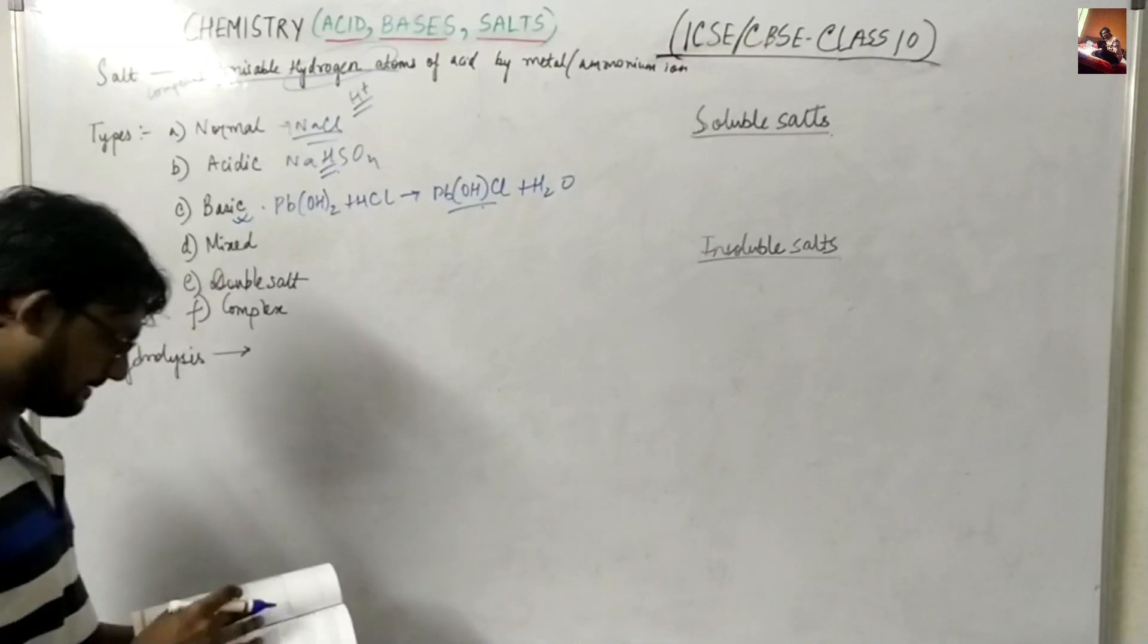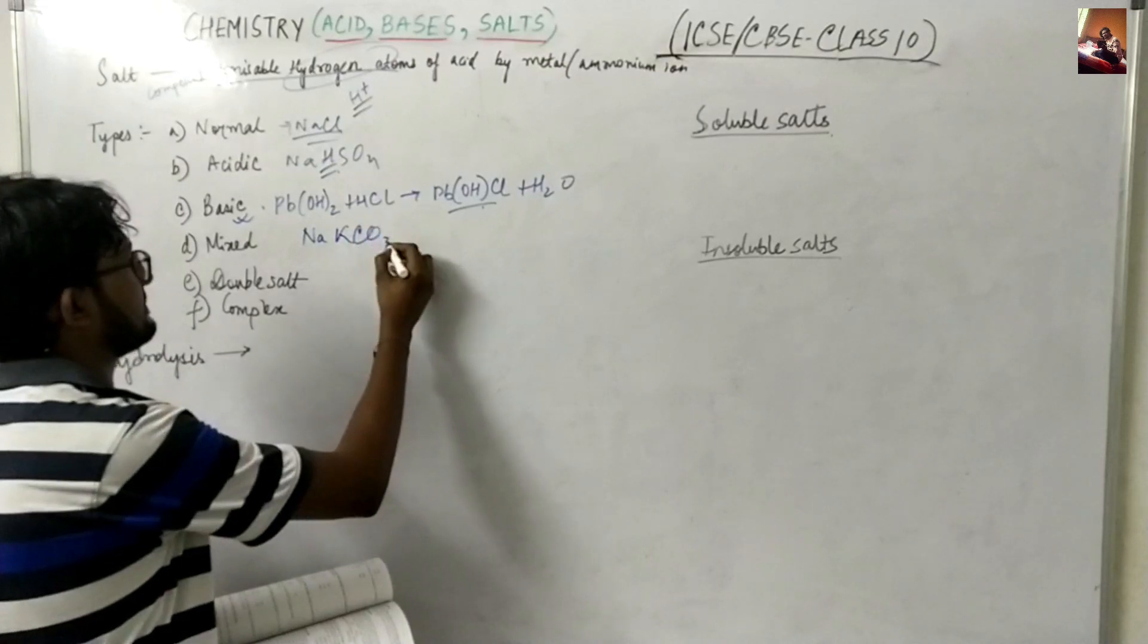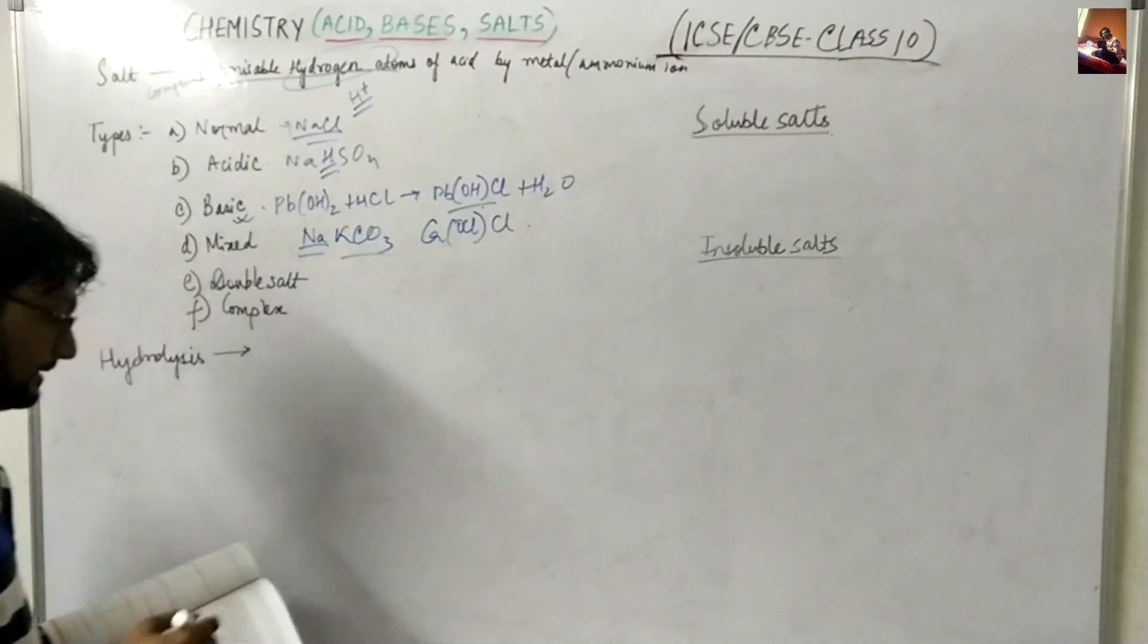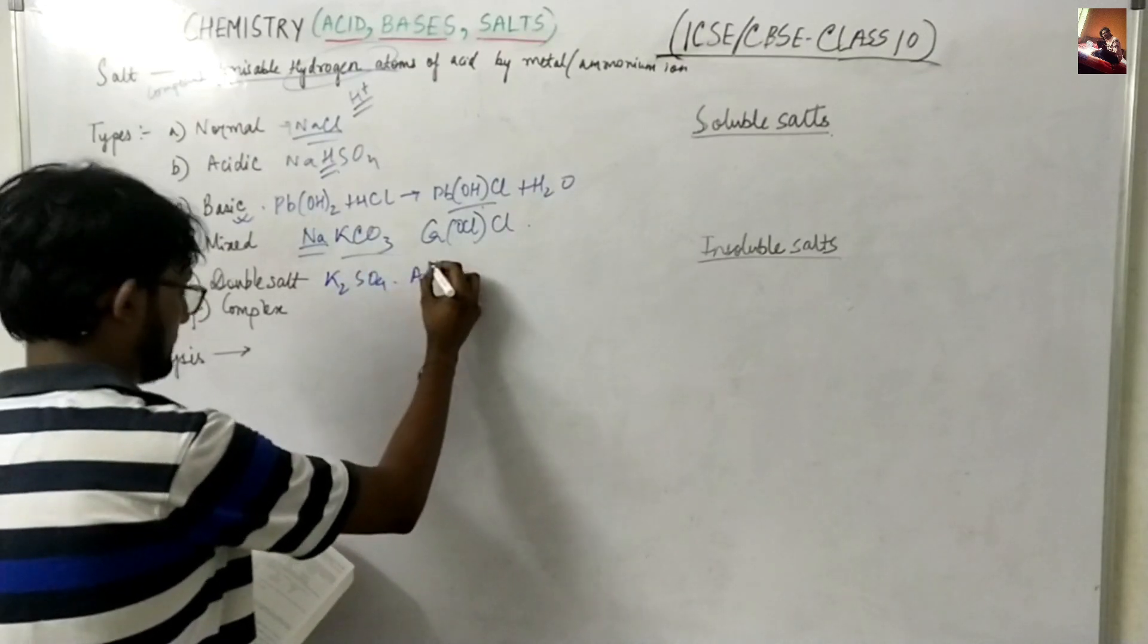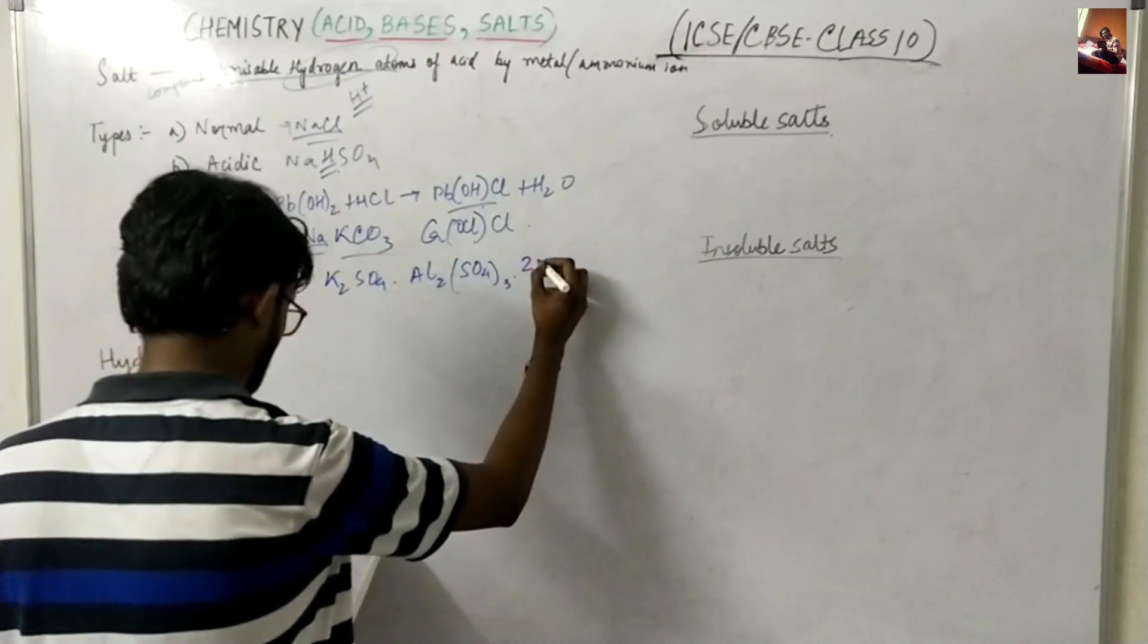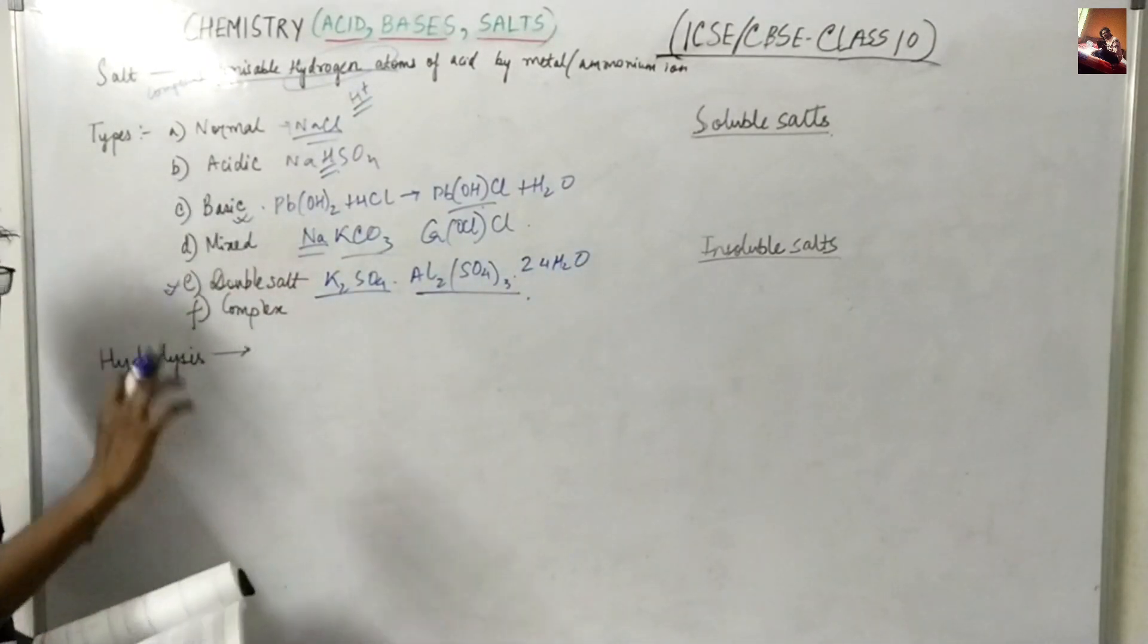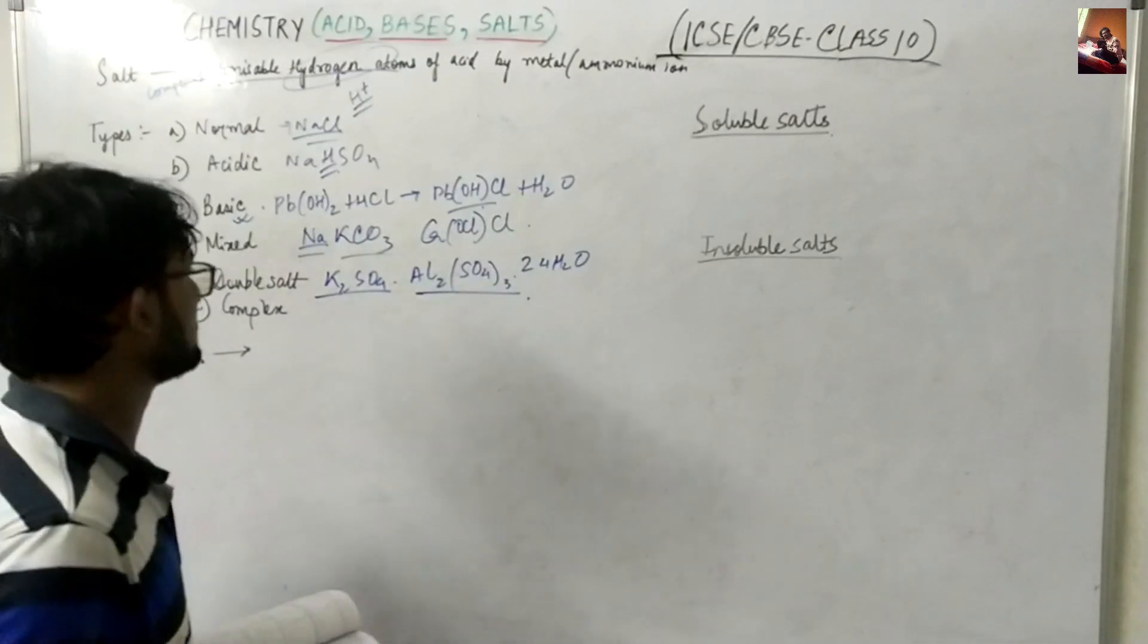Mixed salt. Mixed is like it has two various kinds of like NaKCO3 Ca(OCl)Cl. In case of double salt, two ions like K2SO4·Al2(SO4)3·24H2O. This is kind of a double salt like K2SO4 and Al2(SO4)3, aluminum and potassium sulfate are there.